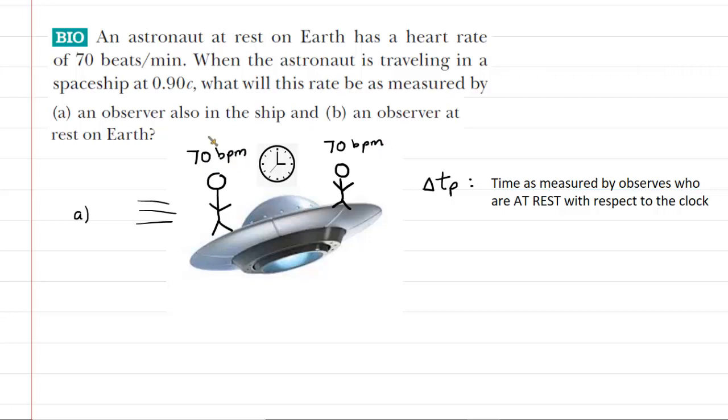So there's really no calculation necessary for Part A. It's more of a conceptual understanding based on the fact that the observer is not moving relative to the clock that is being used to measure the astronaut's heart rate. And therefore, the heart rate measurement won't change. It's 70 beats per minute.